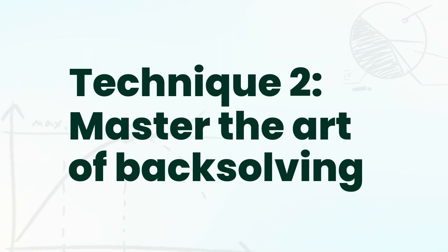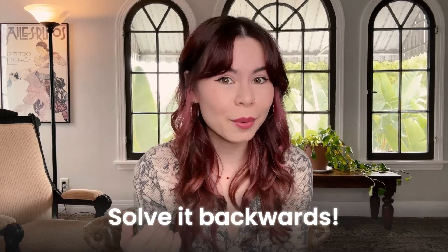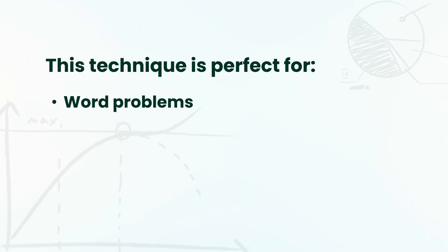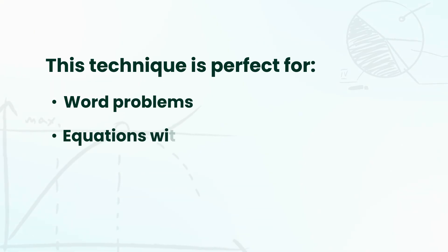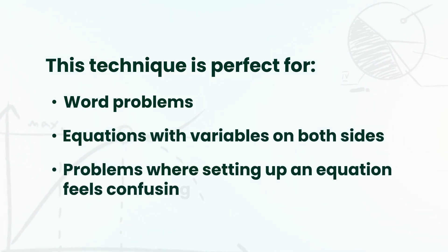Technique number two: master the art of back-solving. If the question gives you multiple answer choices — often numbers — don't solve the problem forwards, solve it backwards. Pick an answer, start with answer C, plug it into the equation, and see if it works. This technique works great for word problems, equations with variables on both sides, and problems where setting up an equation feels confusing. This will save you a lot of time.